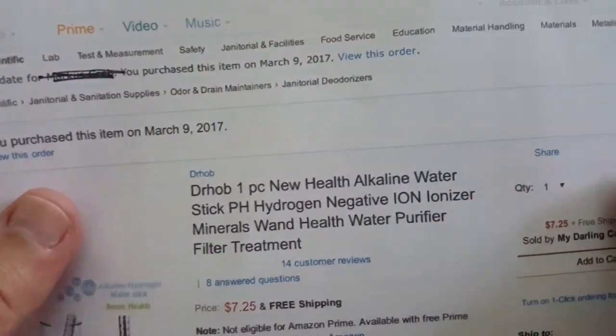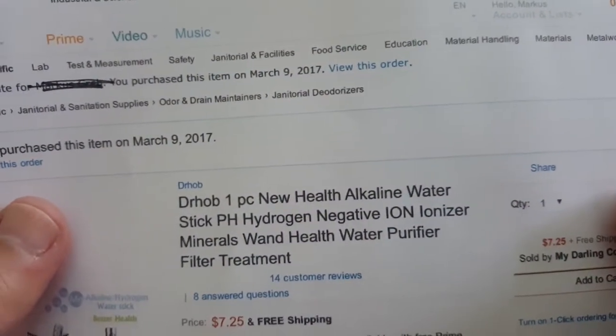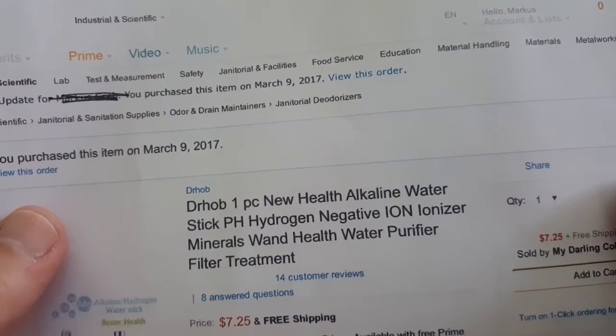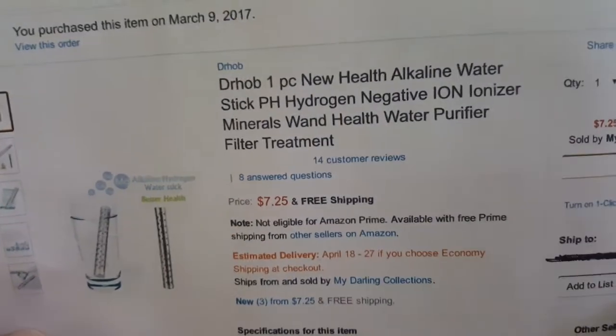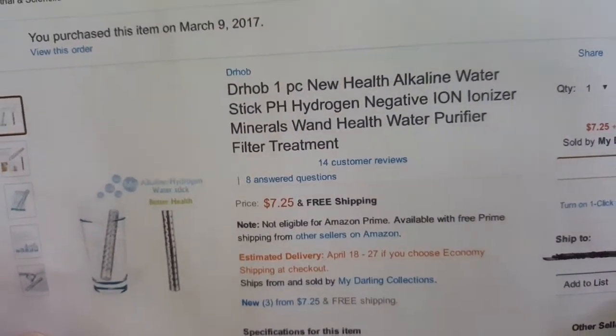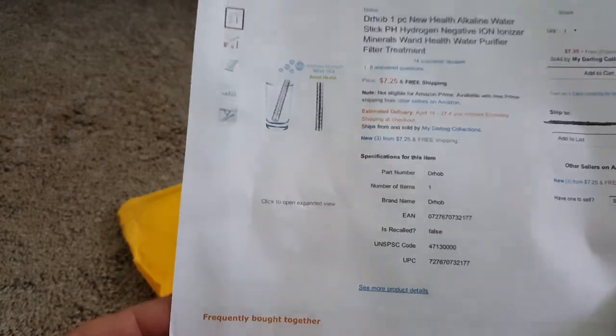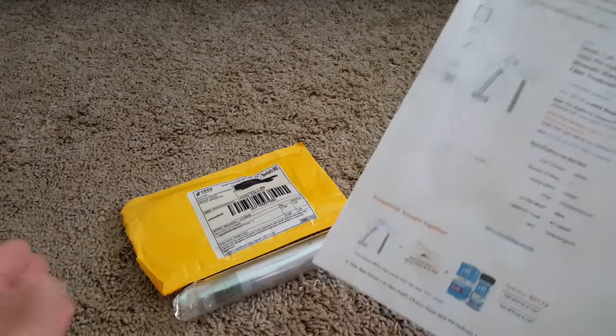One piece new health alkaline water stick pH hydrogen and negative ionizer and so on. It was seven dollars and 25 cents and came with free shipping. It took me a little bit more than two weeks to get it.